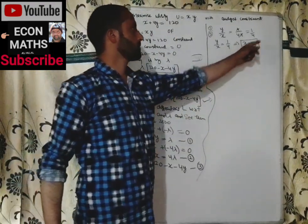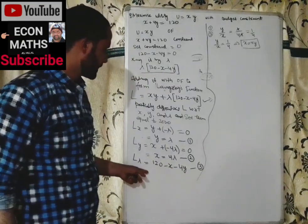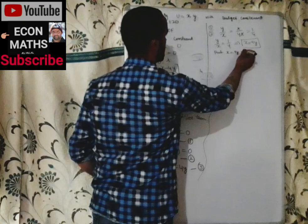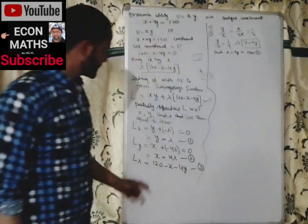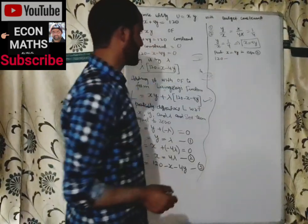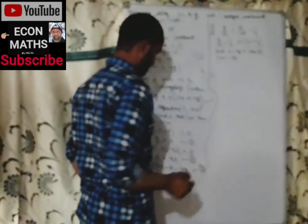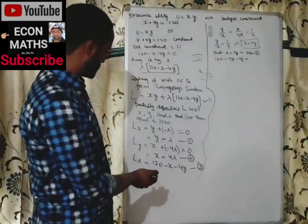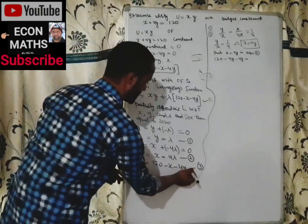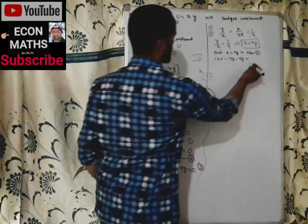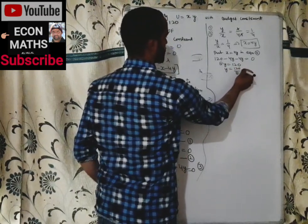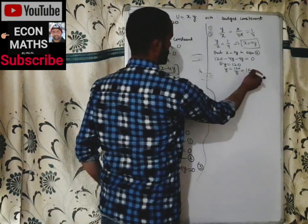We substitute x = 4y into Equation 3: 120 − 4y − 4y = 0, which gives 120 − 8y = 0, so 8y = 120, and therefore y = 15.